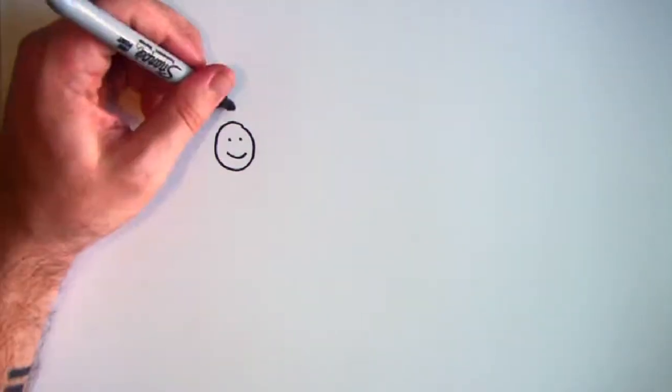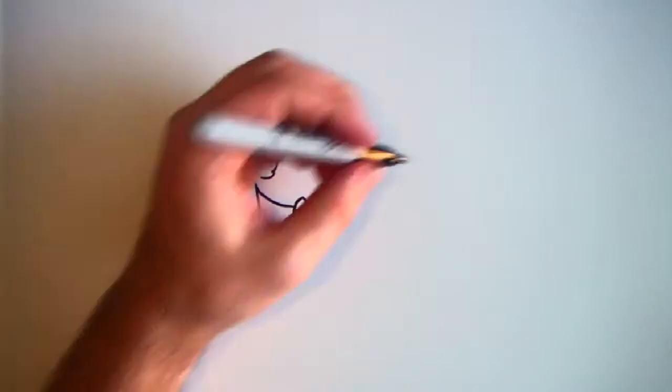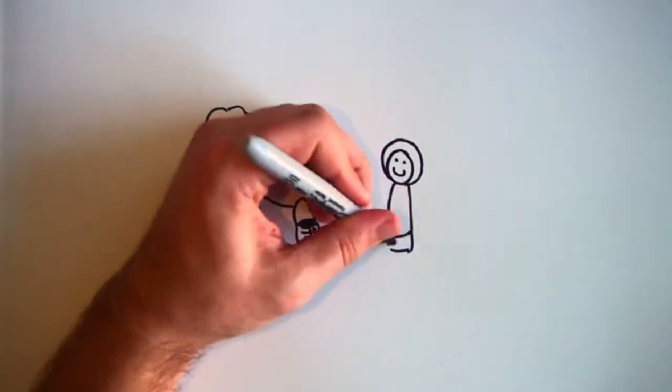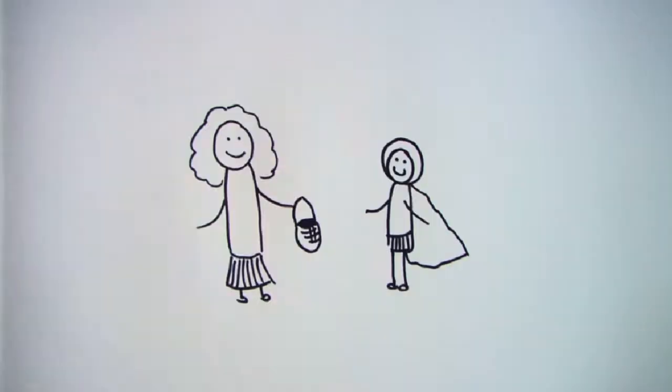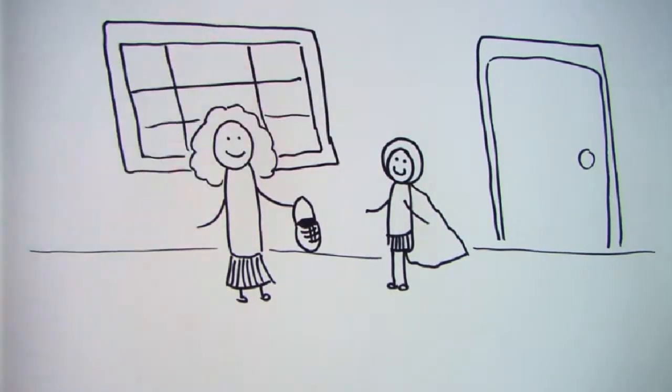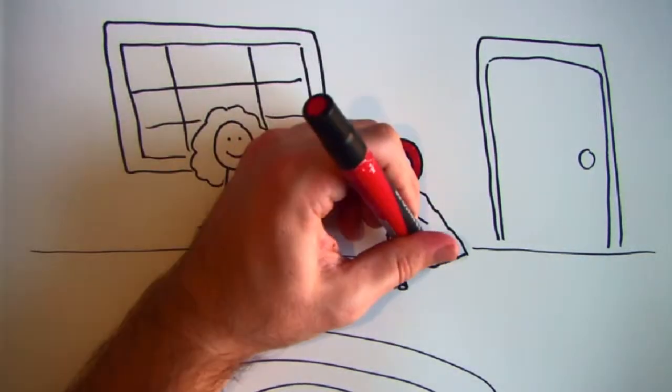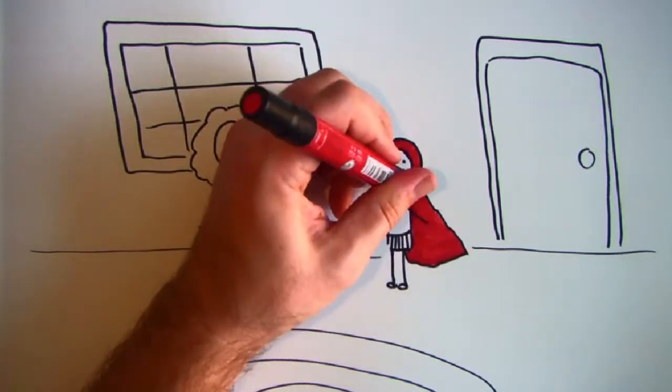One day, her mother filled a basket with treats and drinks and sent Red Riding Hood to her grandmother who lived far off into the woods. My dear, be sure to stay to the path. Don't wander off, her mother warned. And Riding Hood nodded in agreement and went on her way.